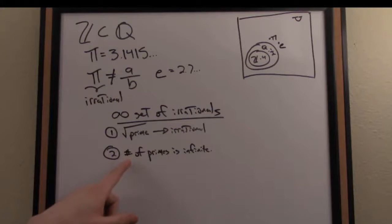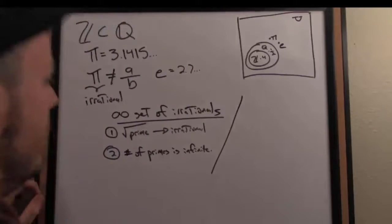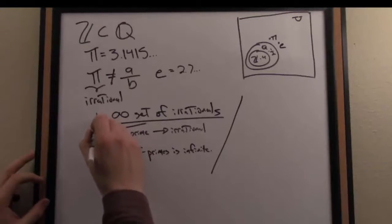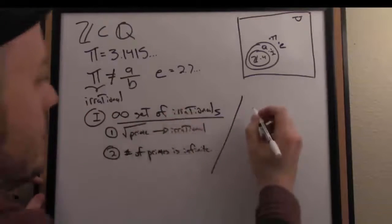So if there's an infinite number of primes, and the square root of any prime is irrational, it stands to reason that there's an infinite number of irrational numbers. A slightly different justification, let's call this justification number 1, that there's an infinite set of irrationals.